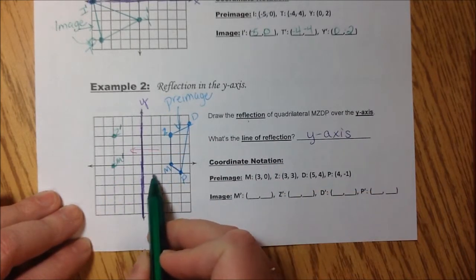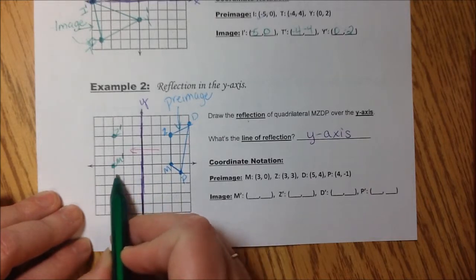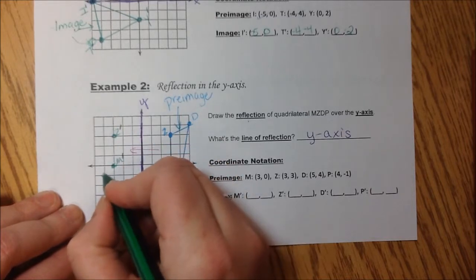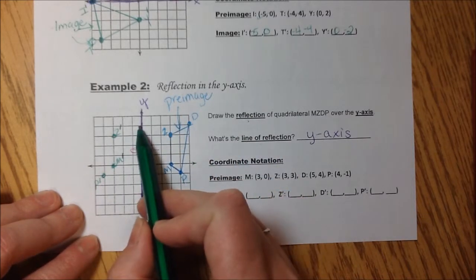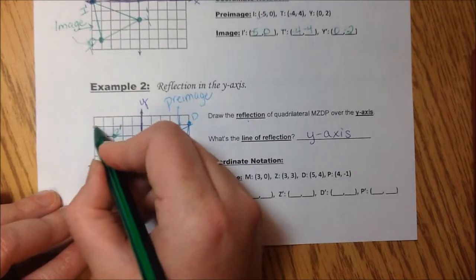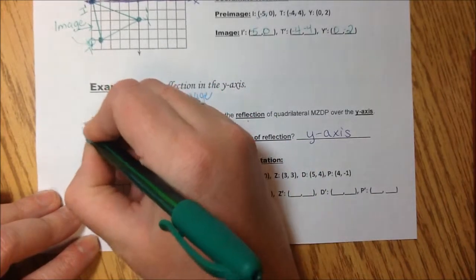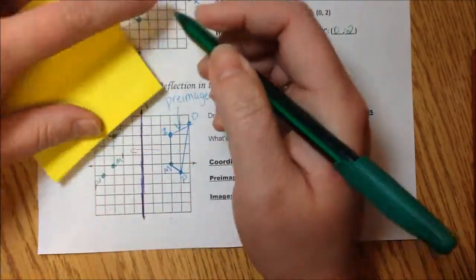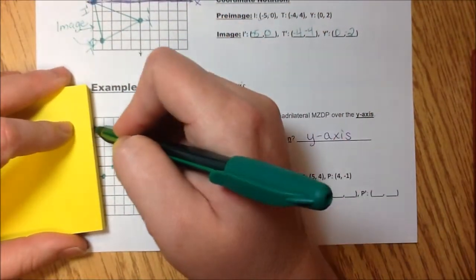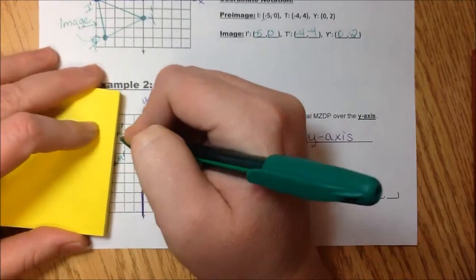P is right here. 1, 2, 3, 4. So I go 1, 2, 3, 4. P prime. And D is up here over to 5, so I'm going to go over 5, D prime. Again, connect your points. And this is your image after the reflection.